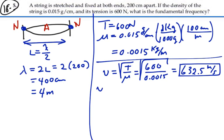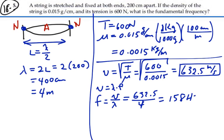Hence, since velocity equals wavelength times the frequency, the frequency corresponds to this, is velocity divided by wavelength. 632.5, divided by 4, and that's equal to 158 hertz.